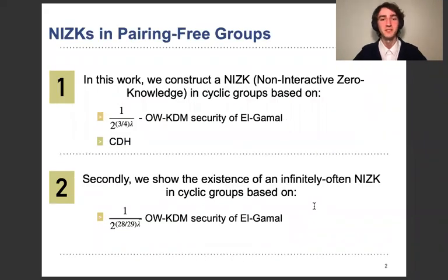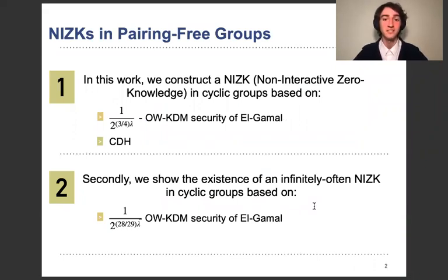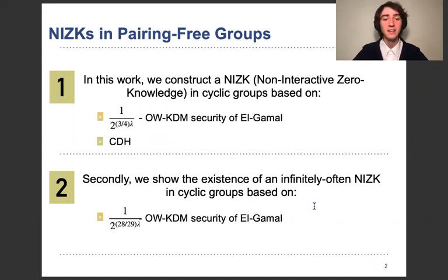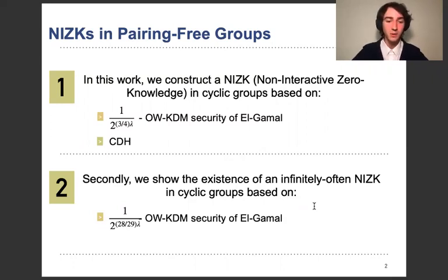In this paper, we present two results. The first is a non-interactive zero-knowledge protocol in cyclic groups based on the 1 to the 2^(3/4 λ) one-way key-dependent security of ElGamal, and CDH. The second result is to show the existence of an infinitely often NIZK in cyclic groups based on the 1 to the 2^(28/29 λ) one-way key-dependent security of ElGamal. And now the exponent becomes worse, as you can see.